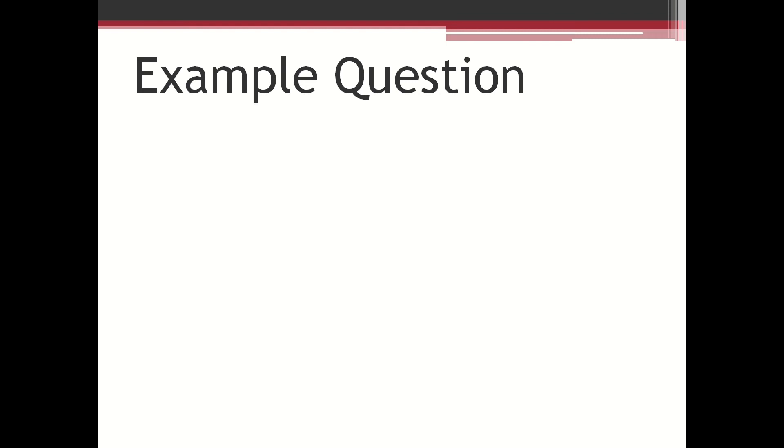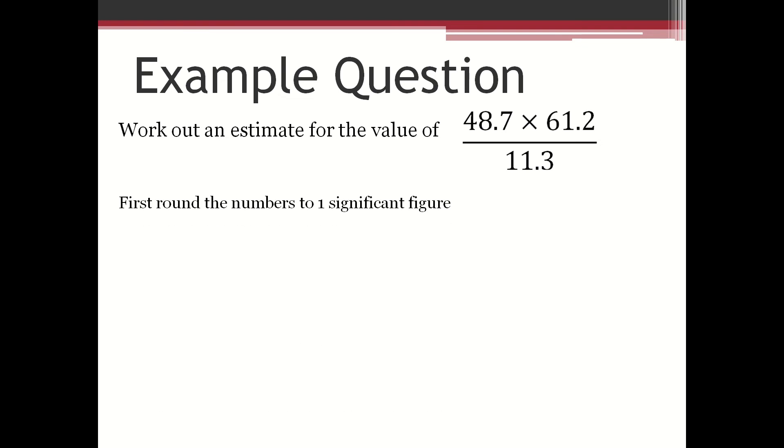Example question. Work out an estimate for the value of 48.7 multiplied by 61.2 divided by 11.3. First, round the numbers to one significant figure,